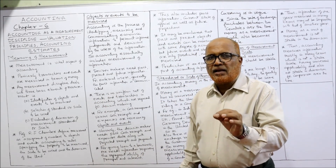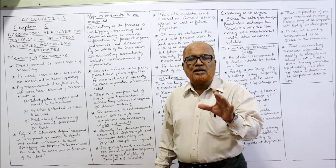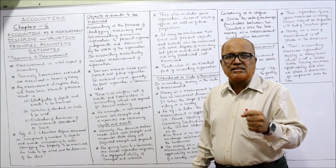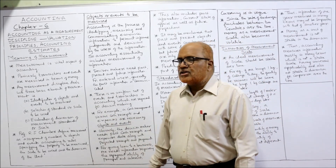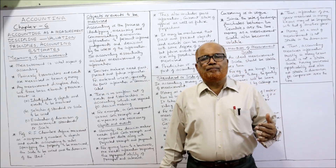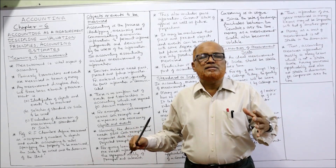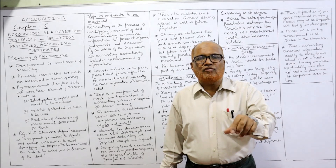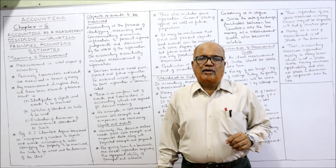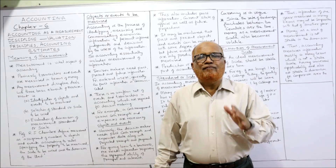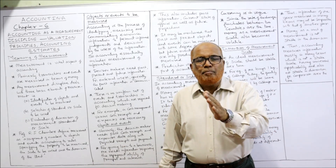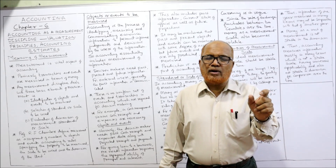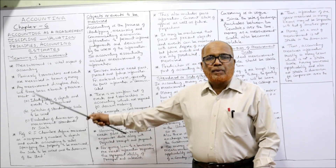Measurement is the vital aspect of accounting. In the definition itself, it involves measuring events and measuring transactions. Transactions and events are measured in terms of money. Whatever transactions are taking place in the business, those events and transactions are measured in terms of money, and then only they will be recorded. If we analyze the definition of accounting: first comes identification of transactions, second measurement of transactions, then recording. So primarily all transactions and events will be measured in terms of money.